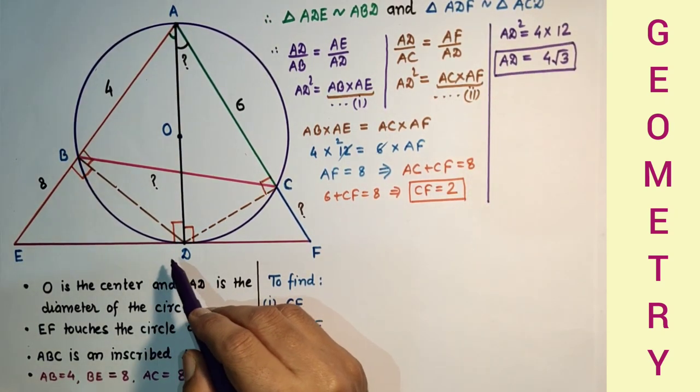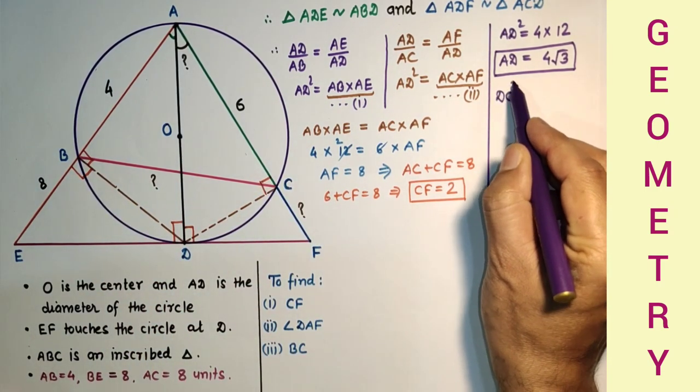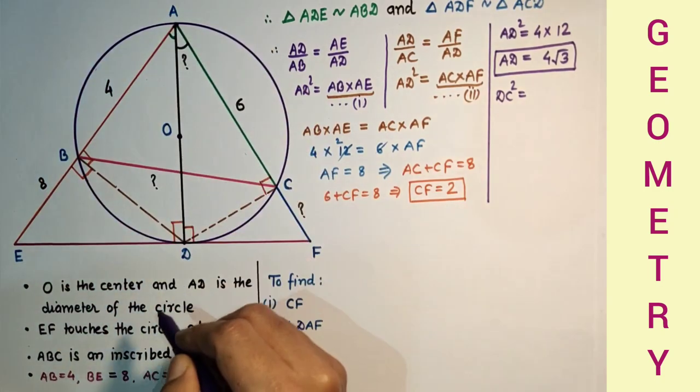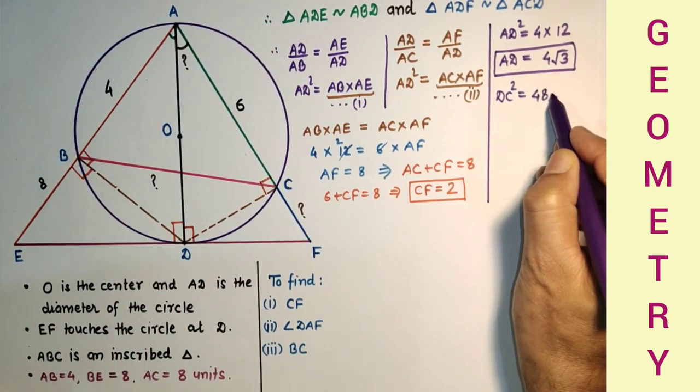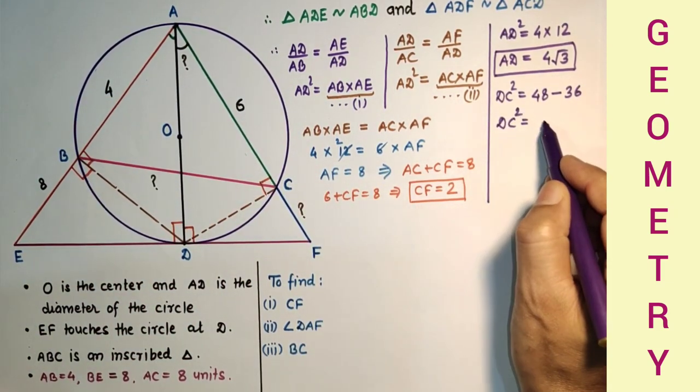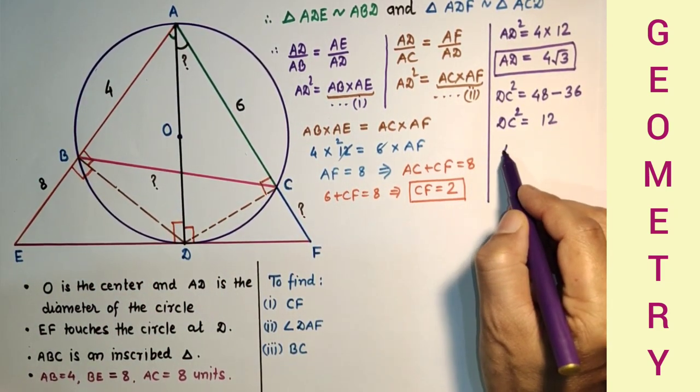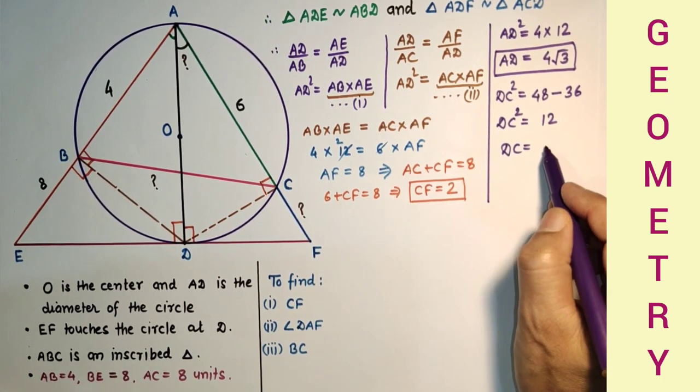Now calculate DC by using Pythagoras theorem. DC² will be AD² minus AC², which is 48 minus 36. Therefore DC equals square root of 12, which is 2√3.